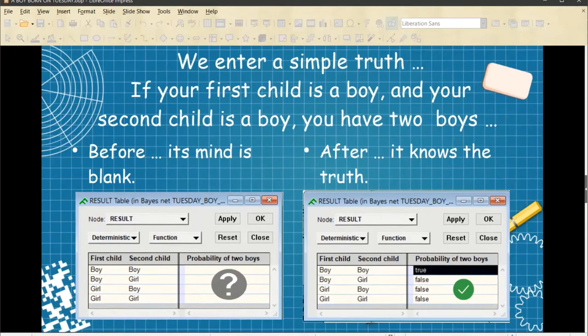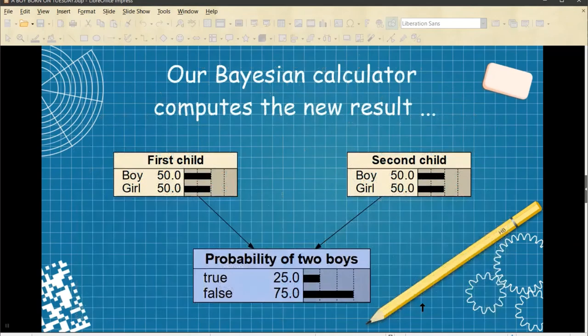Before, its mind again is blank. And after, it knows the truth. We say, if the first child is a boy, and the second child is a boy, then the probability that you have two boys is 100%. It is true. Otherwise, it's false. That simple. Check. Now, our Bayesian calculator computes the new result and says, in that case, the probability of having two boys is 25%, as expected.